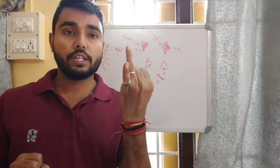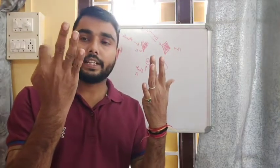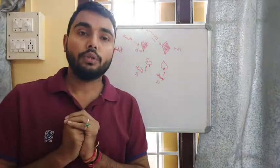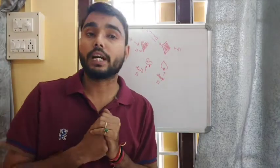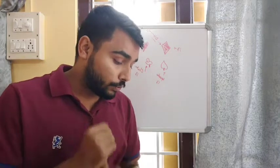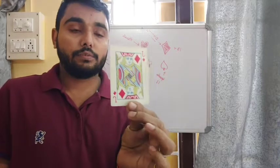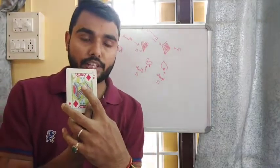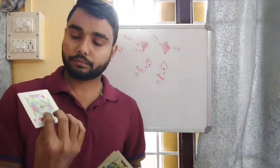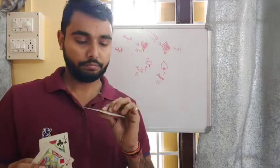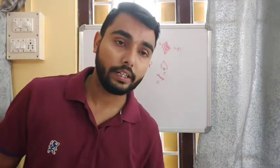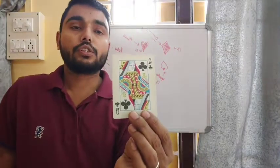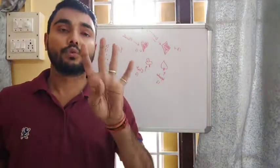The cards in each suit are numbered from two to ten — that's nine numbered cards. The remaining four cards are: jack, which is a face card; queen, also a face card; king, also a face card — and there are four of each across the four suits, giving four jacks, four queens, and four kings.